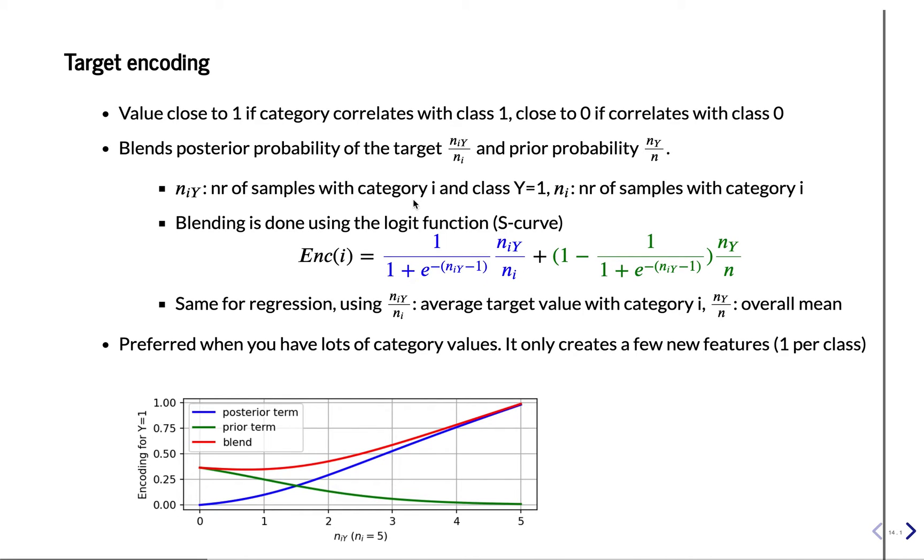So if you have many samples which have the category and are associated with the positive class, over all the points of category i, if that ratio is large, then it has a large posterior probability that this row will be one.